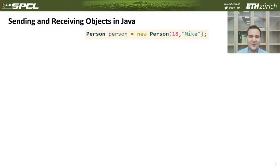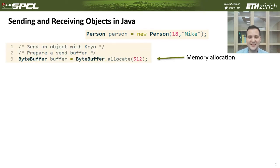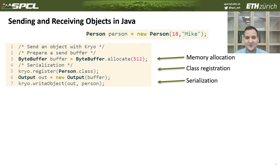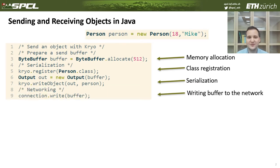Before talking about NAOS, I'd like to explain how we send objects in Java right now. Let's consider an example when we send an object of a class Person between two applications. The sender application would need to first allocate memory for sending an object — a send buffer — then deploy one of the serialization libraries to convert the object into byte format and write it to this buffer. Finally, we would be able to send this buffer over the network.